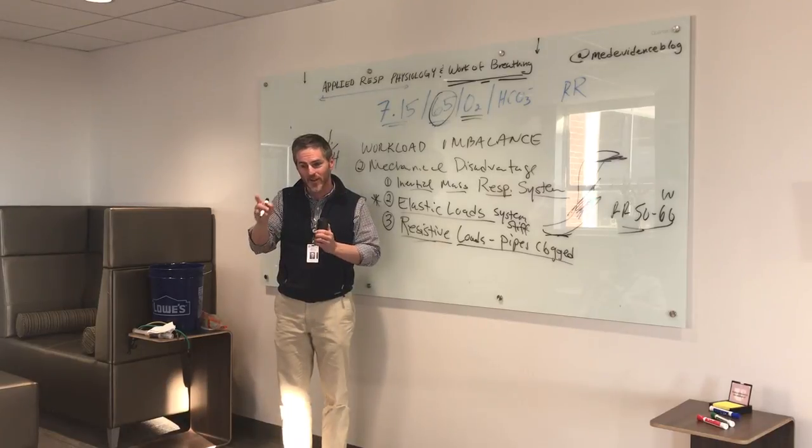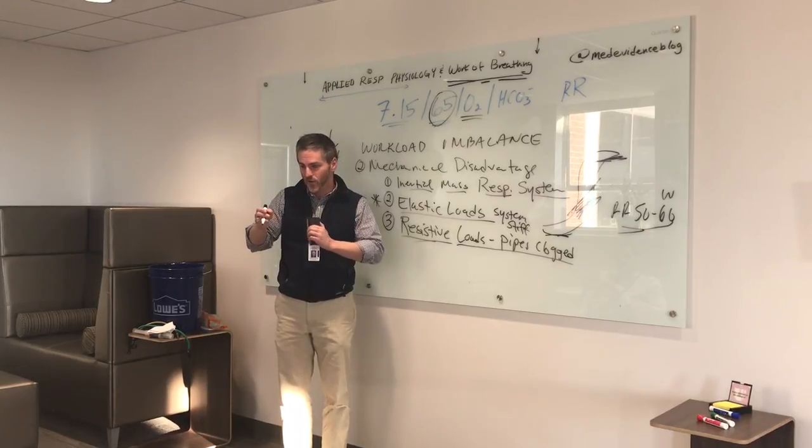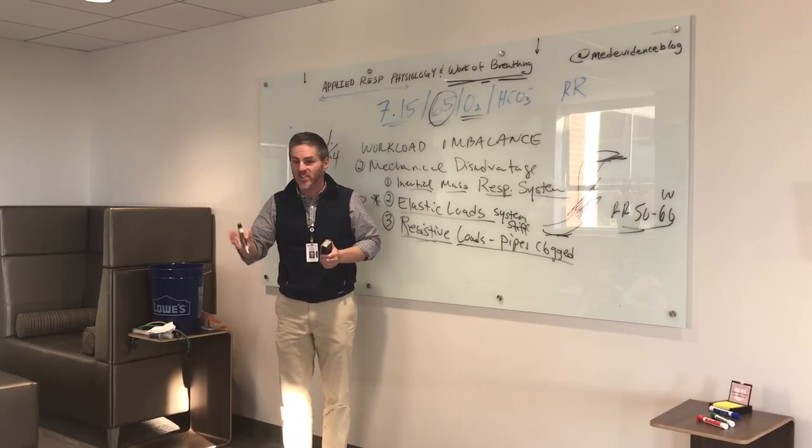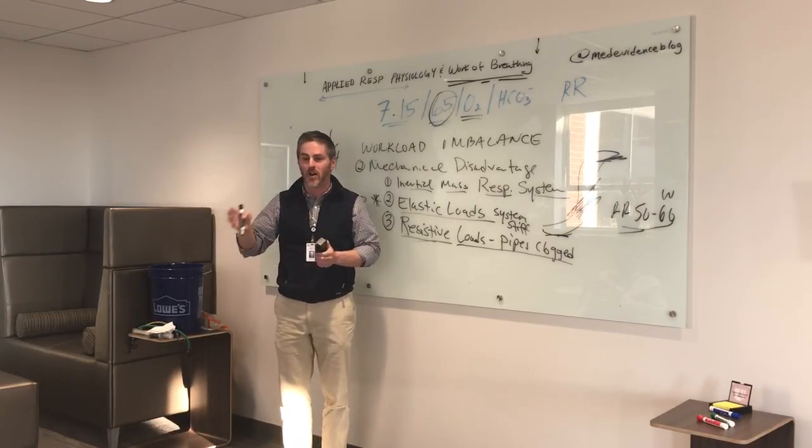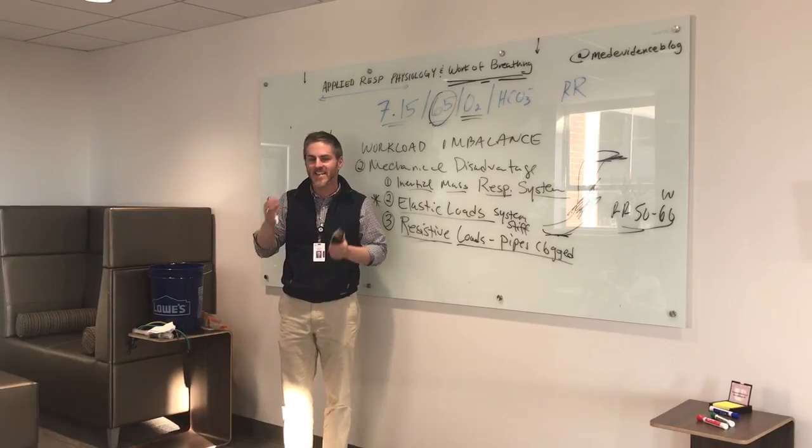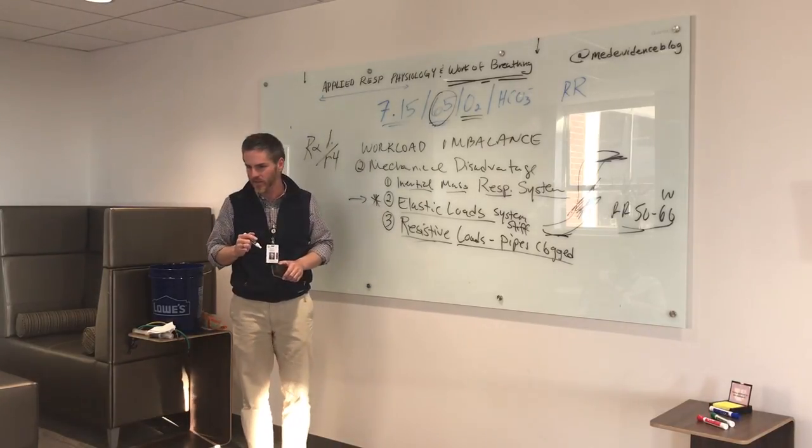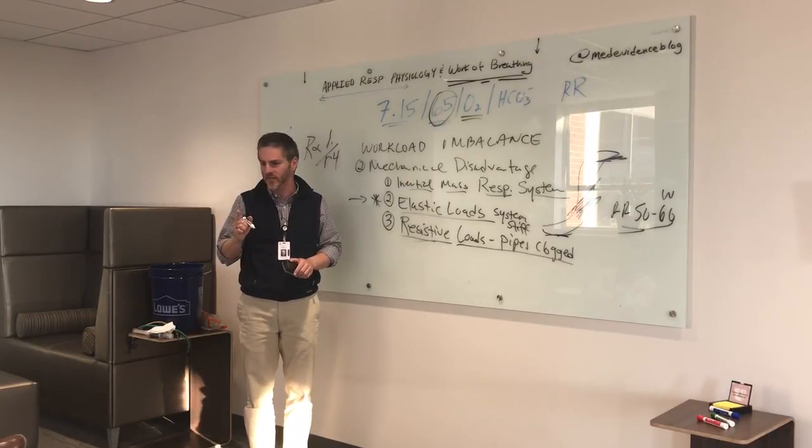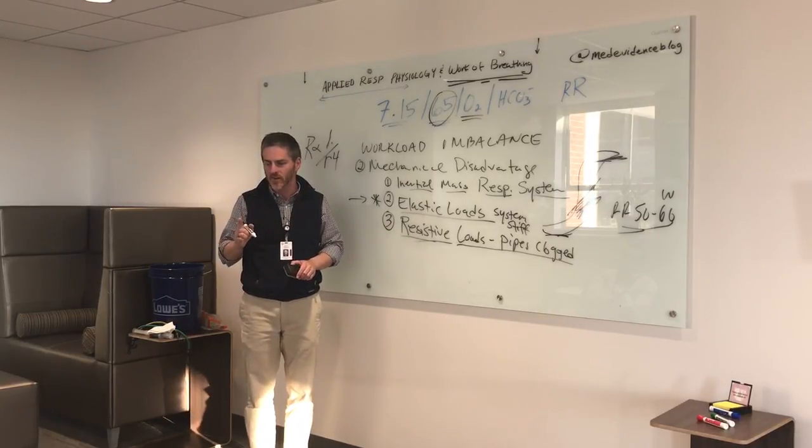They don't have normal elastins. They're not elastic enough. They're too compliant. Then the airways collapse and you can't get air out. Secretions, airway edema, asthma, all of these things. Anything that causes the pipes to be clogged imposes a resistive load. And I'm going to show you in part three what a resistive load is and feels like to make it so you will never ever forget it.